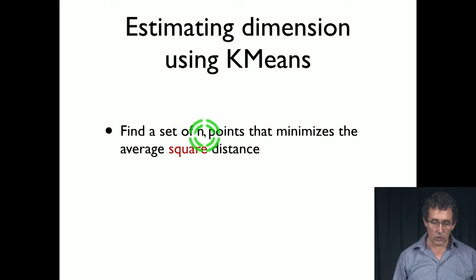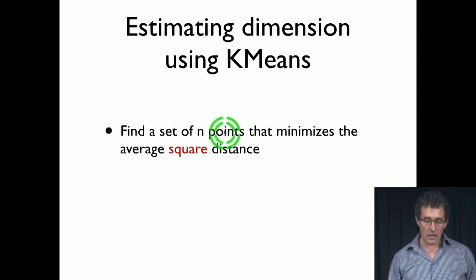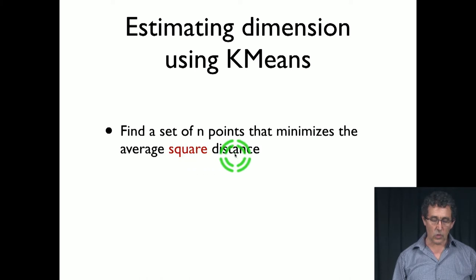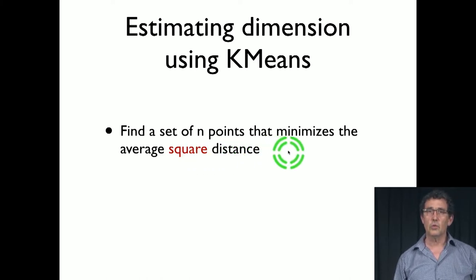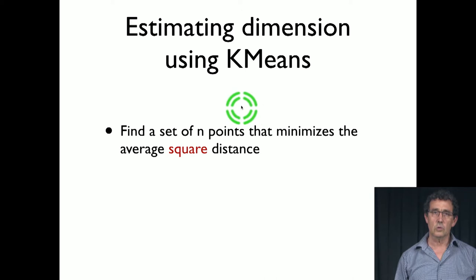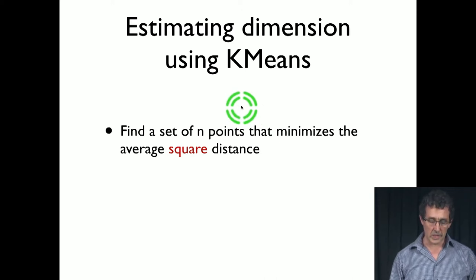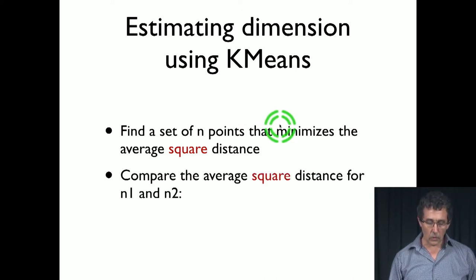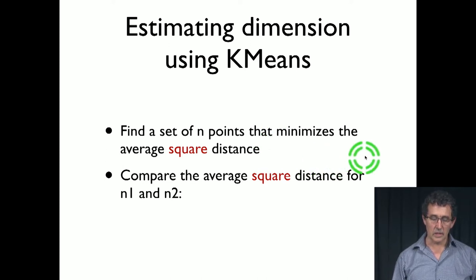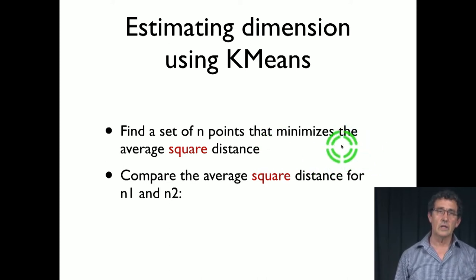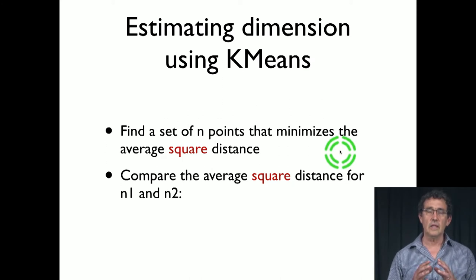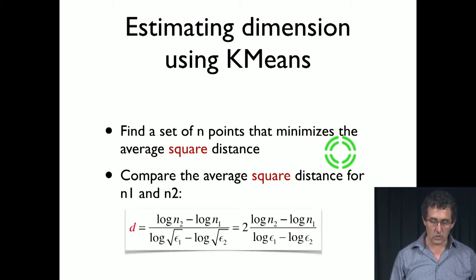We're going to select here n points rather than k and minimize the average square distance of randomly selected points to the closest representative. So we're going to compare the average square distance for n1 and n2. We're going to basically do k-means for k1 and k-means for k2 that is much larger, and then we're going to look at the slope that we get from our definition.